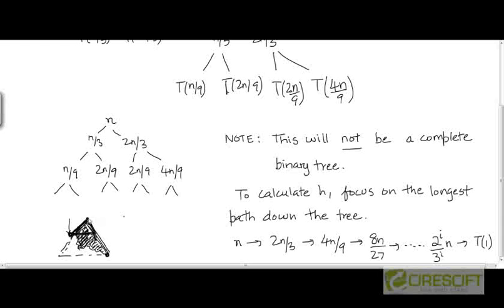So we saw that when we computed the level sums for level 0, level 1, level 2 a couple of videos ago, we were getting constant values of n. That is why we came to an upper bound of O(n log n).